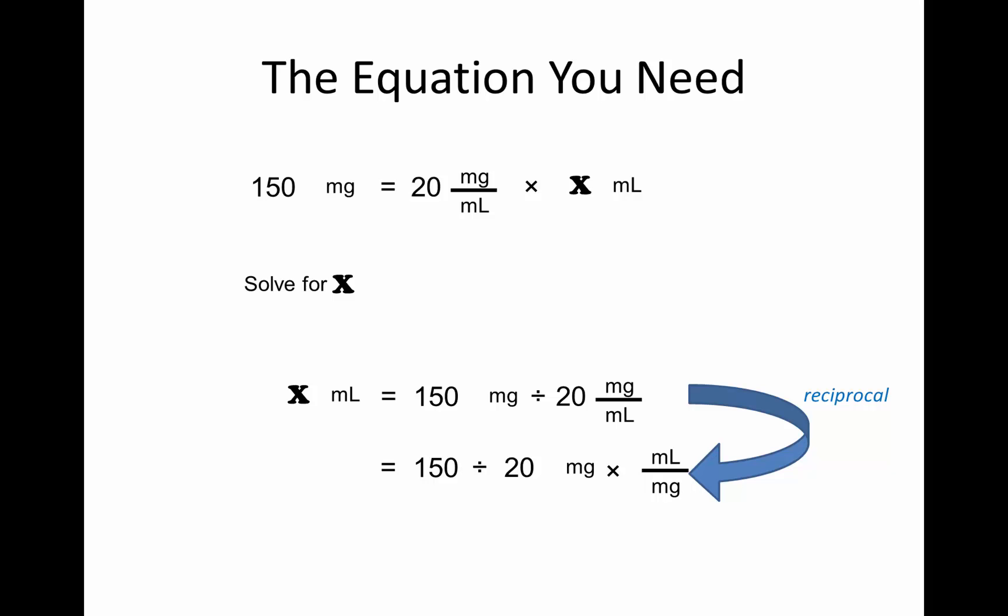Now that we know that the units are mg times ml per mg, we can cross out both milligrams so that we are going to see that we're going to end up with just milliliters as our final unit.